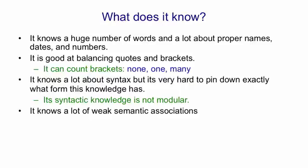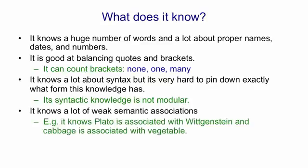It knows a lot of weak semantic associations. For example, it only ever produced the word Wittgenstein once, and it produced that soon after producing the word Plato. So it knows that Plato and Wittgenstein are associated. It clearly knows that cabbage is associated with vegetable. It doesn't know much about the precise ways in which these things are associated. People are like that too if you get them to respond very fast.